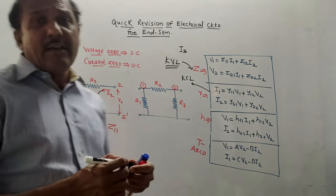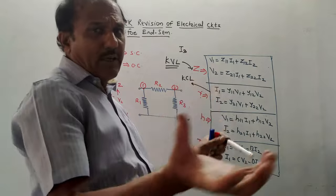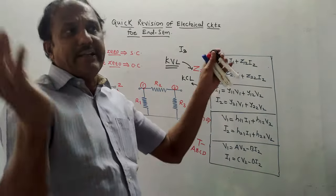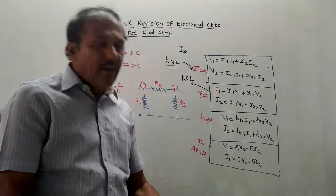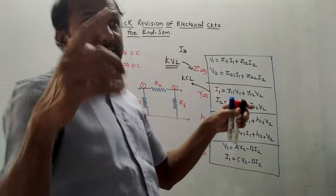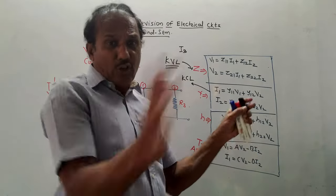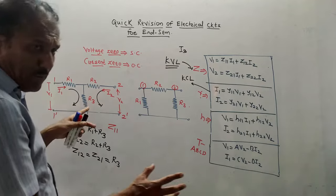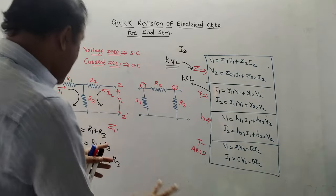A simple trick is: if possible, try to convert the network into a T network by taking series and parallel combinations. But keep in mind, if there is a dependent source, then you cannot convert it into a T-type network — you have to use KVL.